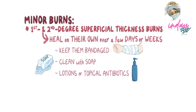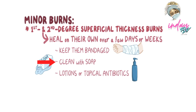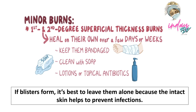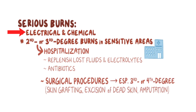For minor burns like first and second degree superficial partial thickness burns, they can heal on their own over a few days or weeks by keeping them bandaged and clean with soap and water. Lotion can prevent drying, and topical antibiotics may be considered. If blisters form, it's best to leave them alone, as intact skin helps prevent infection.